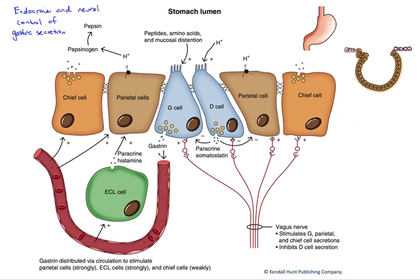In this figure, we're going to look at the endocrine and neural control of gastric secretion — in other words, how are the cells that line the wall of the stomach controlled, and how do their secretions aid digestion within the stomach?